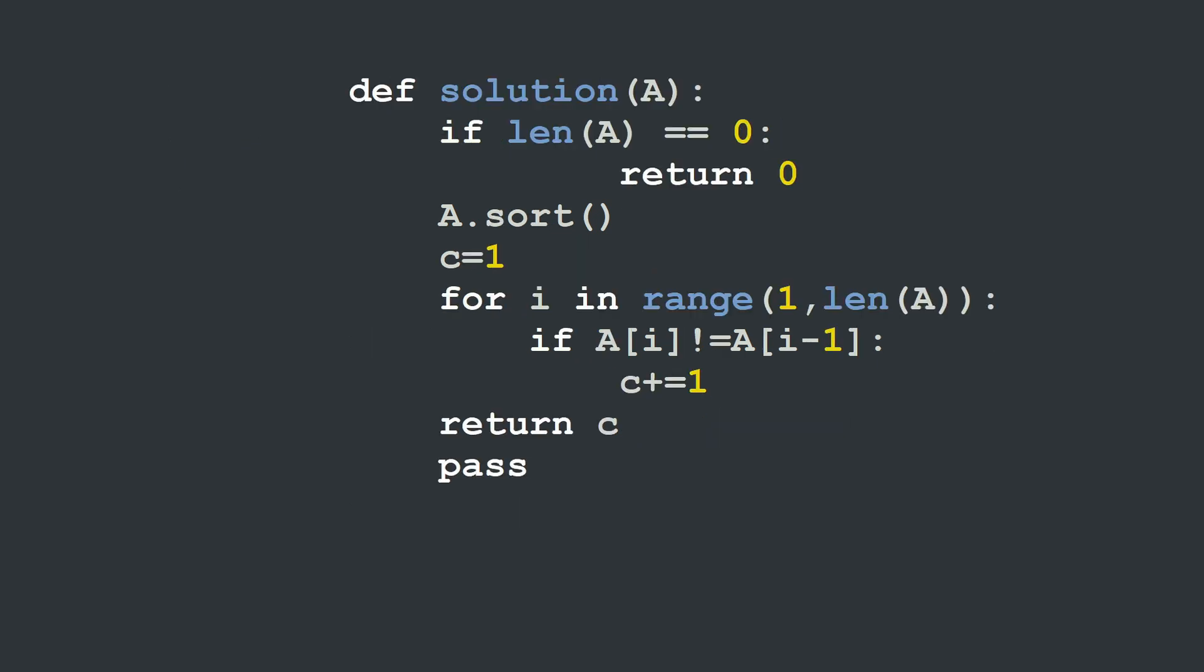The solution in Python can be written in a very similar way. First we check if the list A is empty, in which case the function should return 0. If not, then we sort A using the sort function and we initialize the counter variable at 1. Then we use a for loop to check the values of the array and compare A[i] with A[i-1]. If it's the case we increment our counter by 1. And when we reach the end of the array we can return C as our final result.